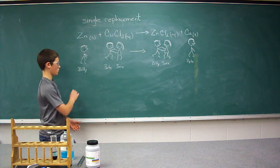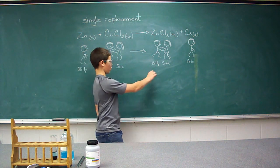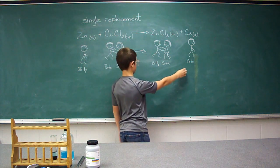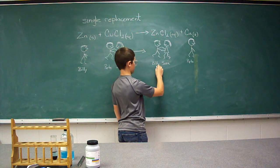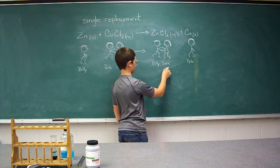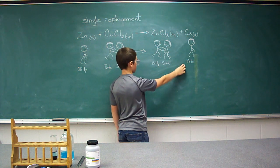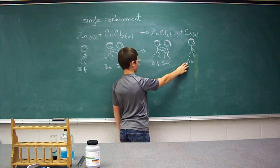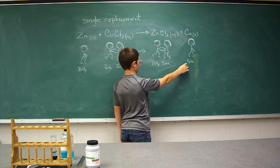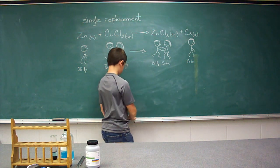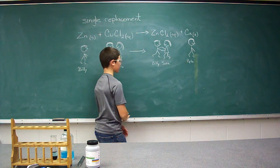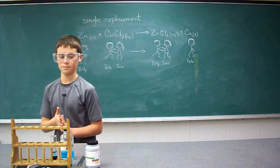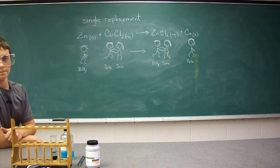After the reaction, the two cations — Billy and Pete — have switched places with each other. Now Billy is dancing with Sarah in the new compound zinc chloride, and Pete, which is the copper, the black substance formed in the products, is standing by himself. We could also use this analogy when we talk about double replacement reactions.